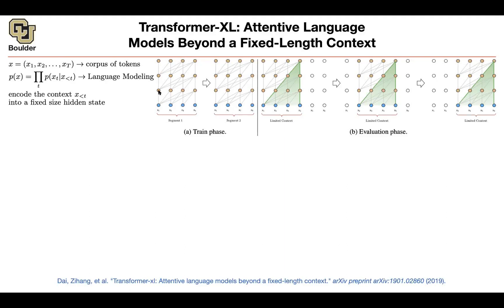Why? Because this point here is paying attention to X1. This point depends on X2 and X1. This point depends on X1, X2, X3. So you're always depending on the past — it's one-sided. This is the decoder part of the transformer, not the encoder.